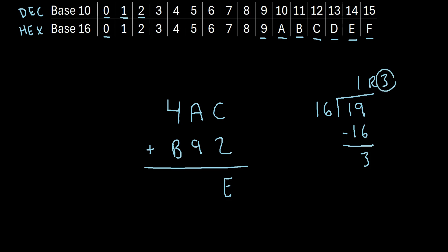Here's the trick: the remainder is what we write in this column right here, and the whole number that we got from the division — this 1 — we place on top of the next column. Now we move on to the last column. We have 1 plus 4 plus B. Remember B is the same as 11. So we really have 1 plus 4, which is 5, plus 11, that's 16.